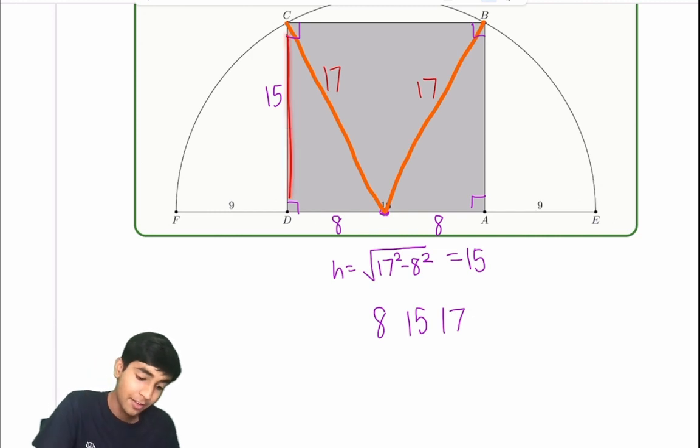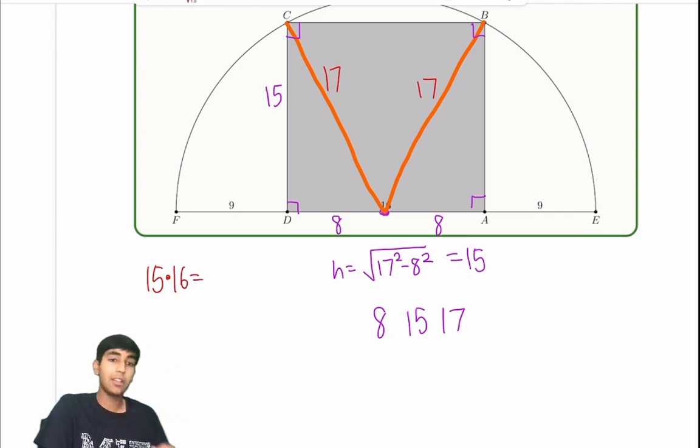So we know that this is going to be 15 without even using the Pythagorean theorem. So this height is 15, this base is 16. The area, 15 times 16 equals 225 plus 15, which is 240.